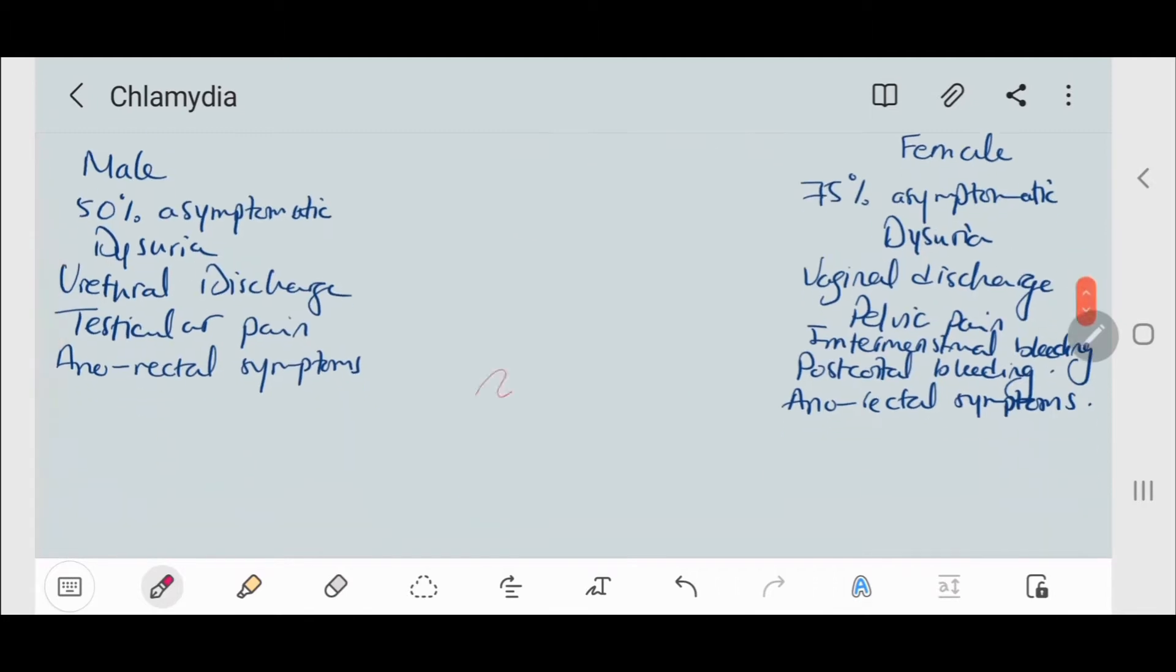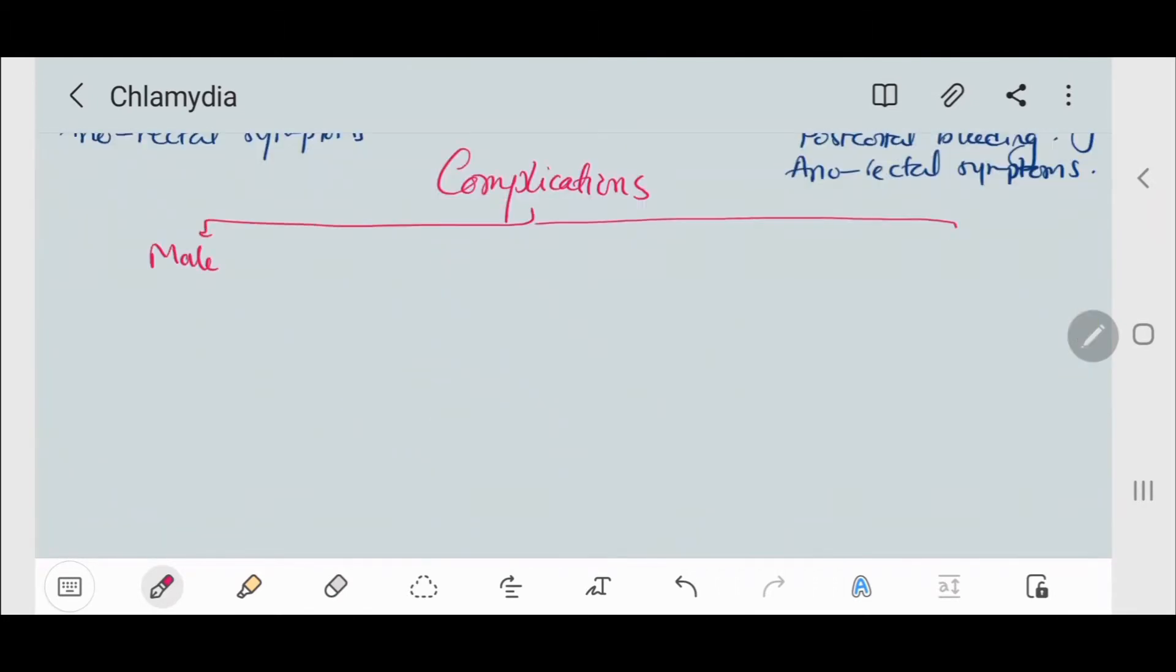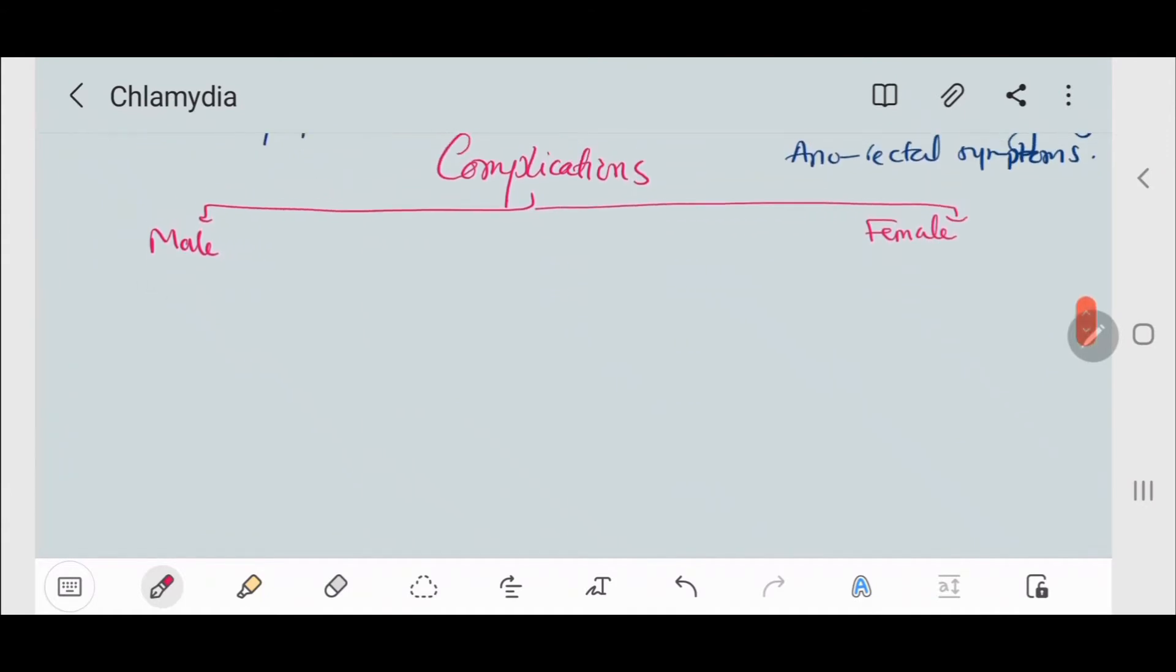As for the complications, they also differ from males to females. In males they could have epididymal orchitis or reactive arthritis, including arthralgia, hypertrophic rash on soles, circinate balanitis, and psoriatic rash.